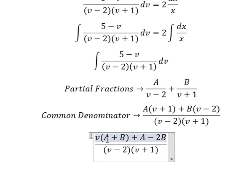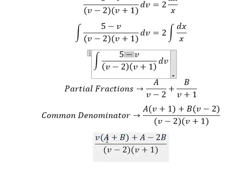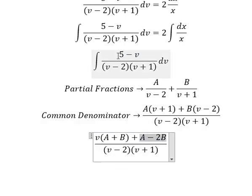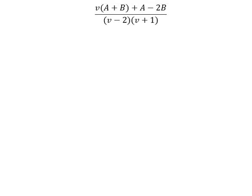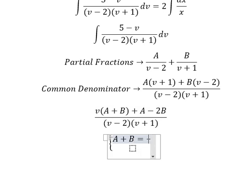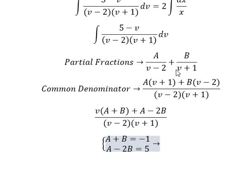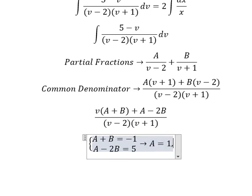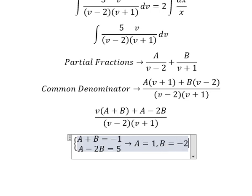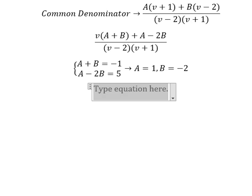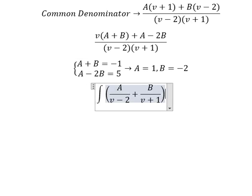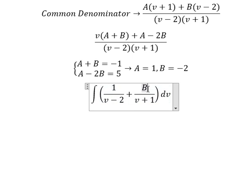Looking carefully at the coefficients: we have negative v, which means A plus B equals negative one, and A minus 2B equals five. Setting up this system of equations: A plus B equals negative one, A minus 2B equals five. Solving gives A equals one and B equals negative two. We substitute A equals 1 and B equals negative 2 back in.